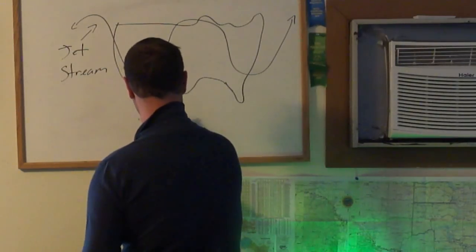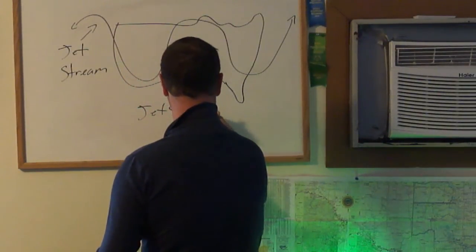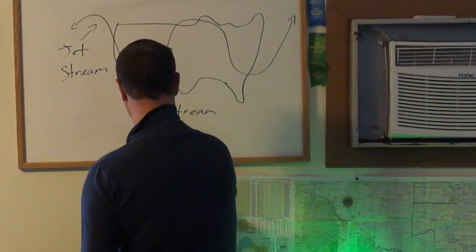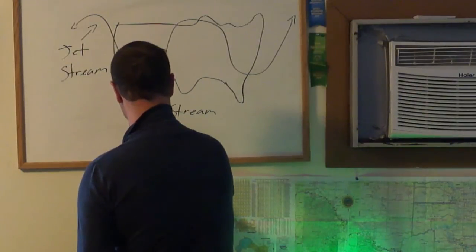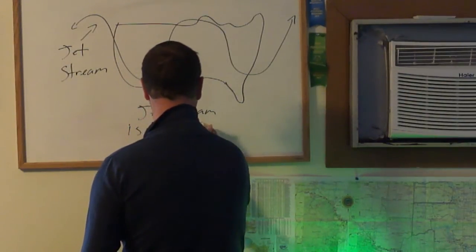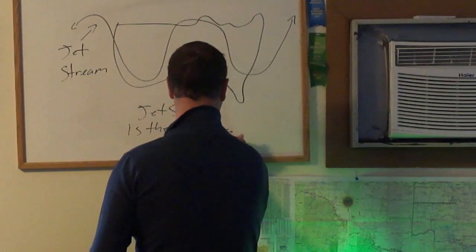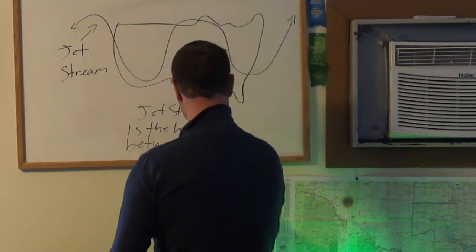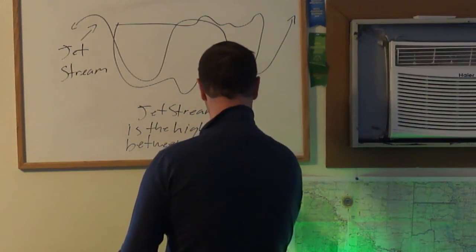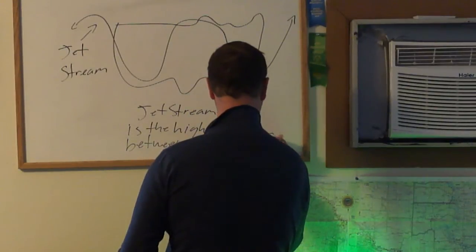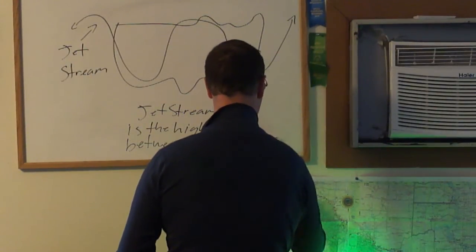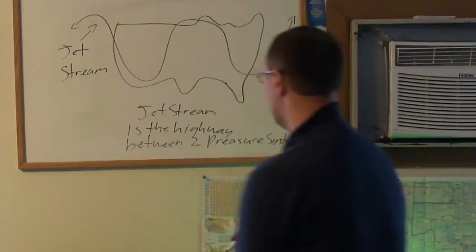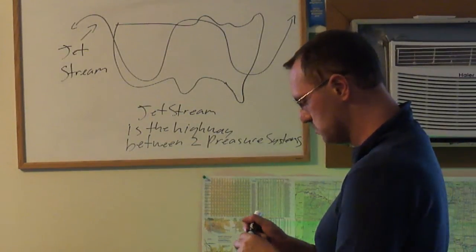The jet stream is the highway between two pressure systems. It is the highway between two pressure systems.